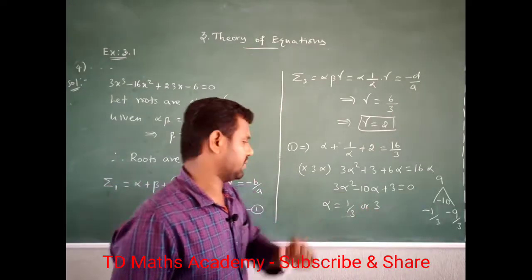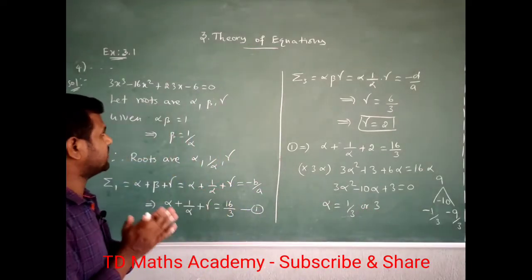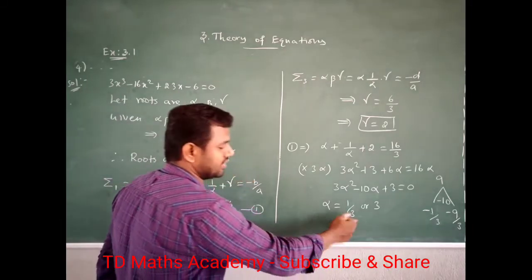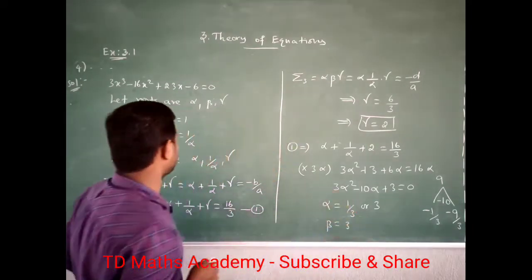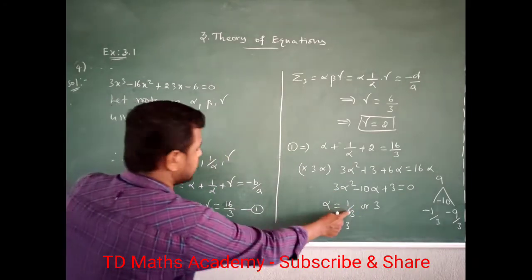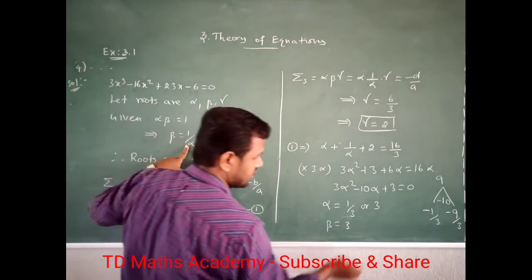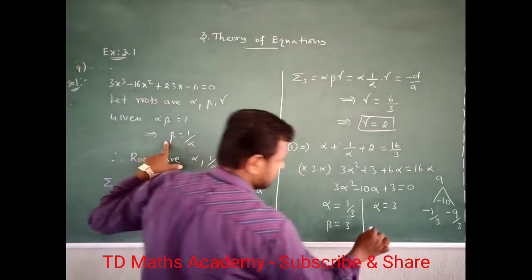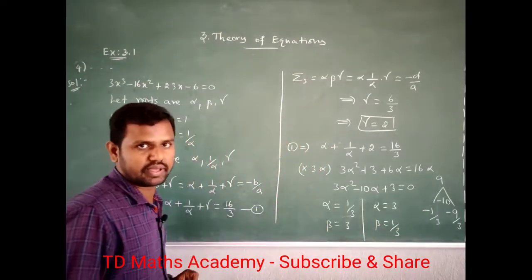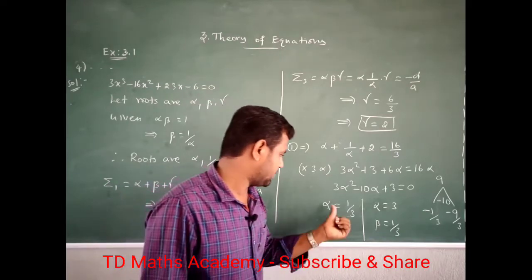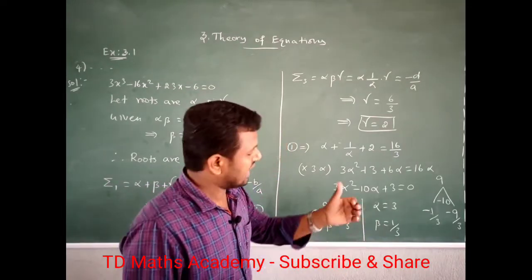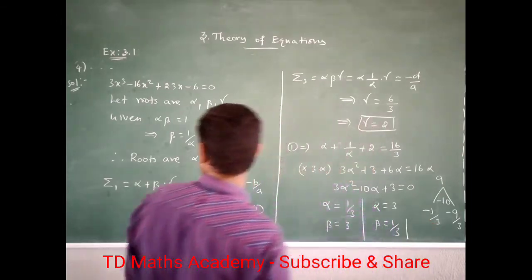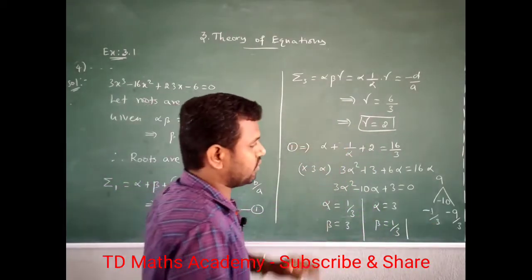So alpha is found. Now for the final answer, we need to find alpha, beta, gamma. If alpha is 1 by 3, then beta is 1 by alpha which is 3. If alpha is 3, then beta is 1 by 3. Gamma we already know — gamma equals 2.